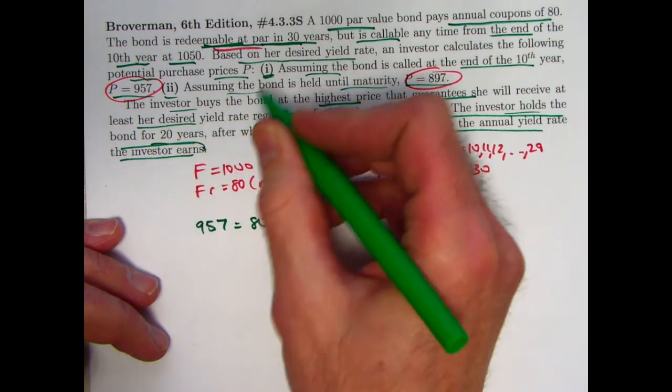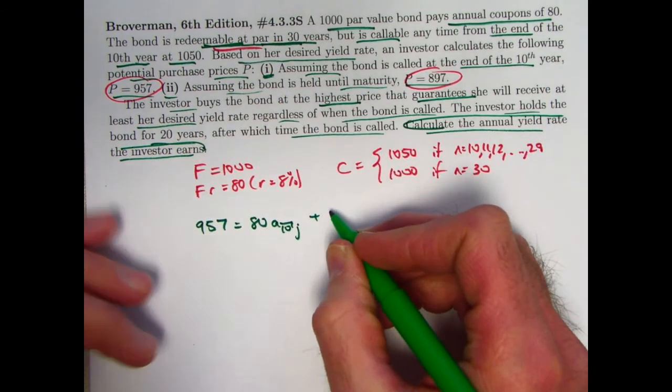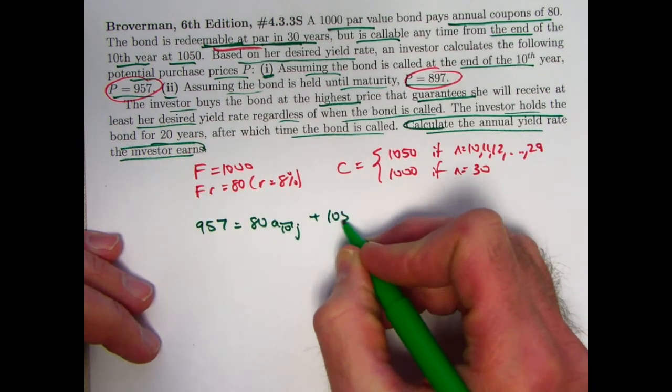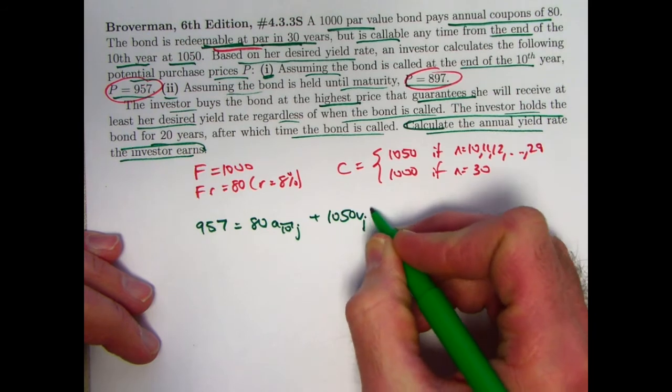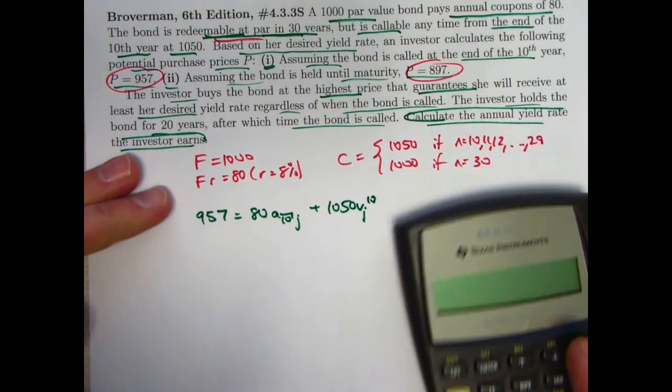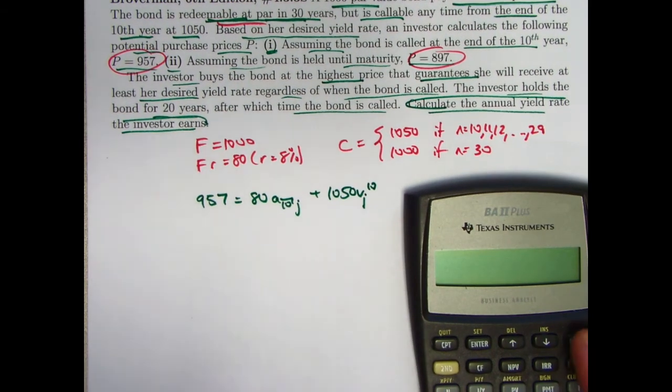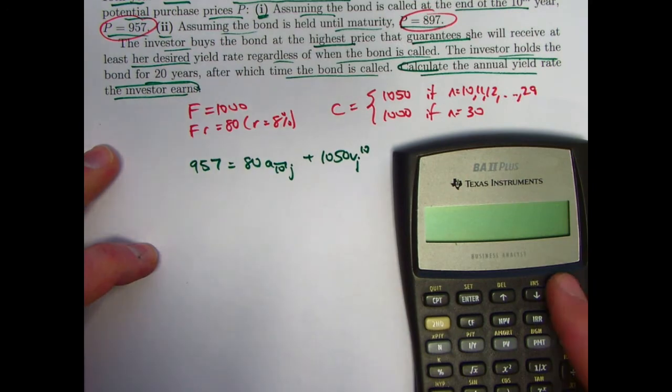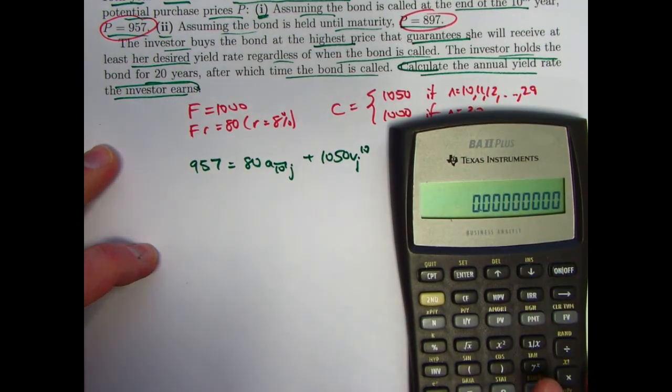if the bond is called at the end of the 10th year, the redemption amount is 1,050, times VJ to the 10th power. I didn't have to write that equation down, but just to help me in thinking about what to plug into my financial functions in the calculator, I'll go ahead and do that to calculate the yield rate.